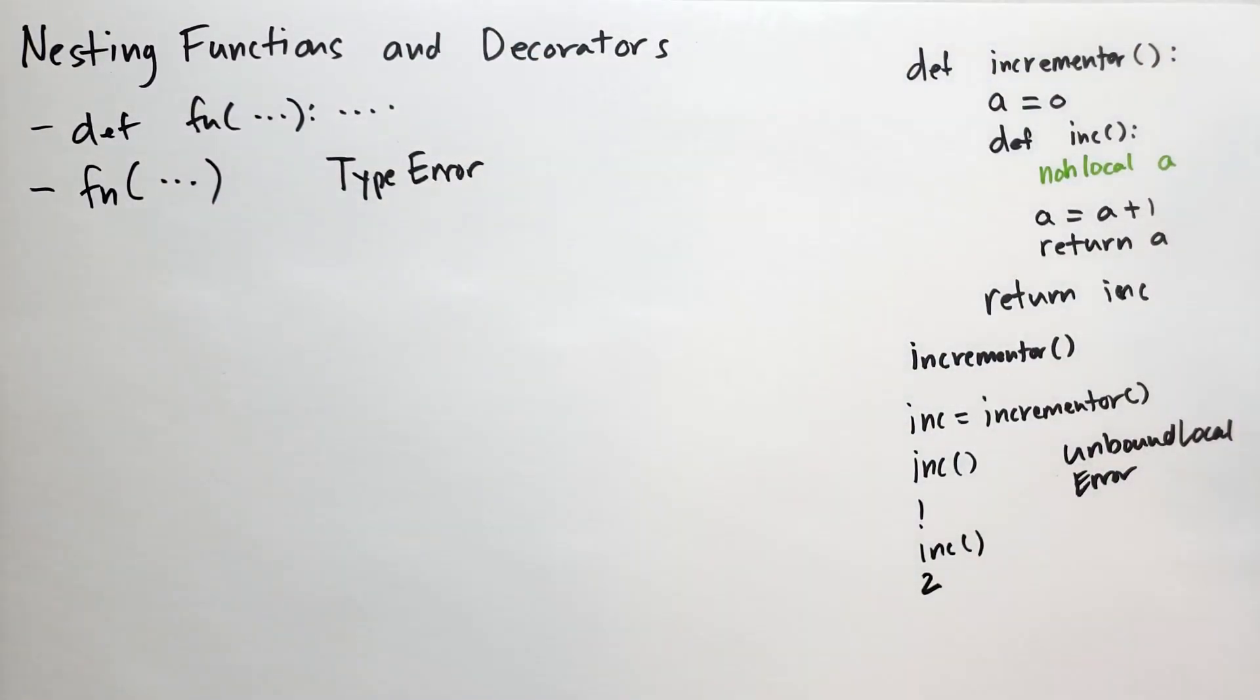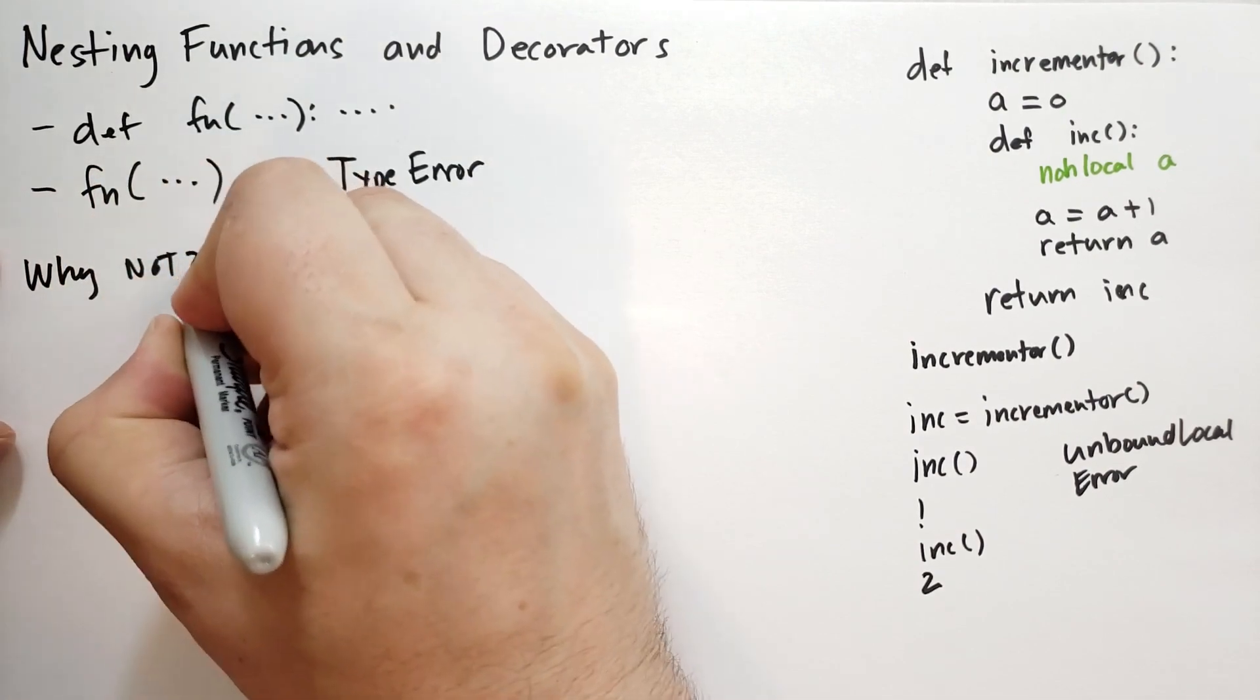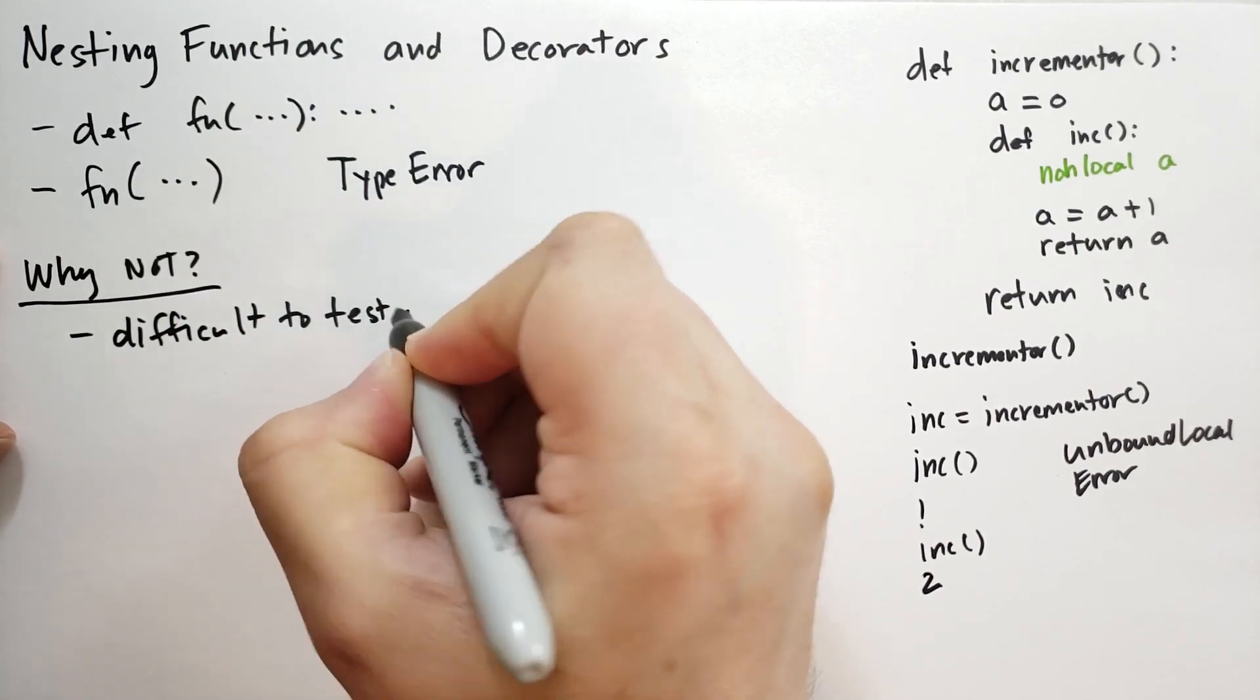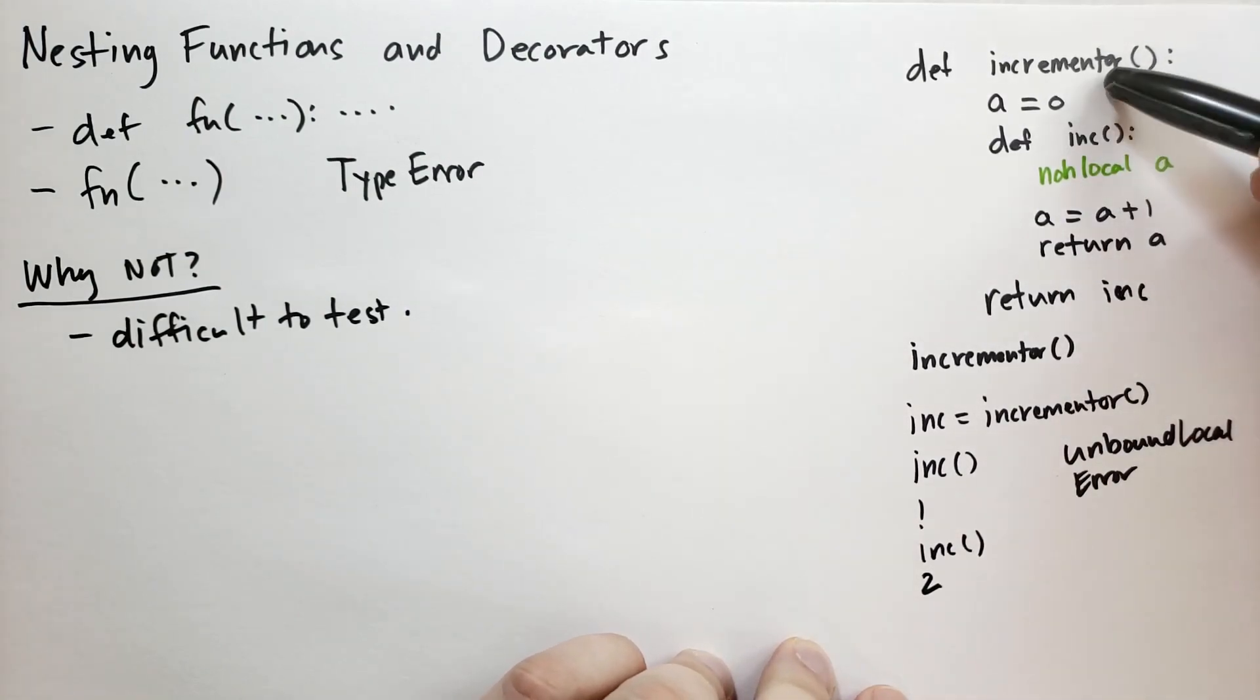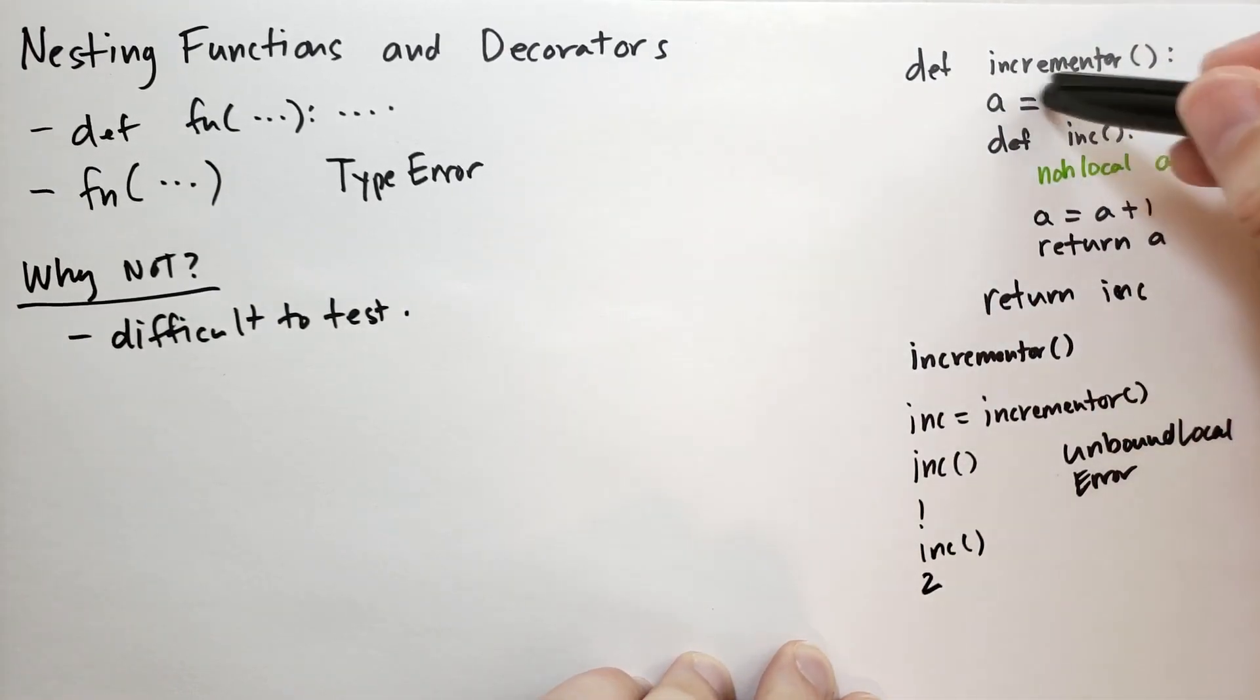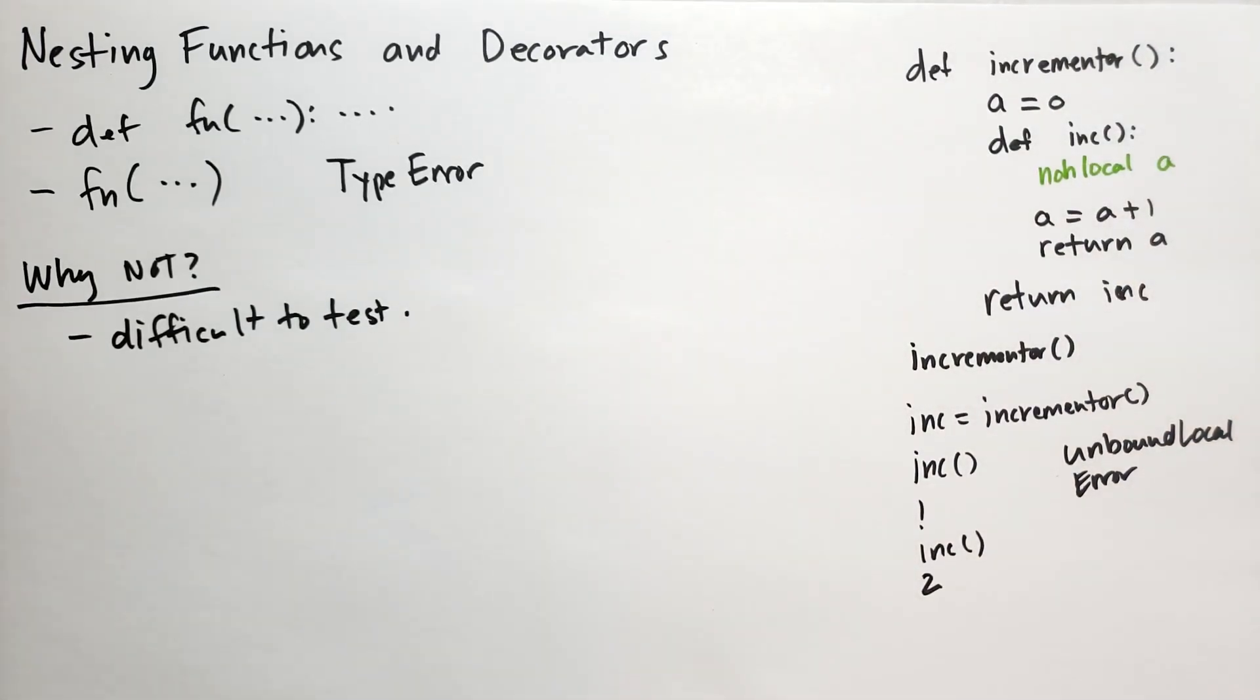Now before we move on, I'm going to tell you why we don't do nested functions. One is it's difficult to test. In such a trivial example as this, it's pretty clear how you would test this function. You would call the incrementor get back something and check that it actually increments. But if you had more complicated code in here, or the surrounding code was more complicated, or there was a very complicated interface between the two namespaces, then testing becomes very difficult. It's much better if you can to avoid nested functions because they're easier to test if they're not nested.